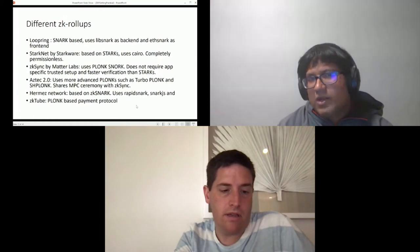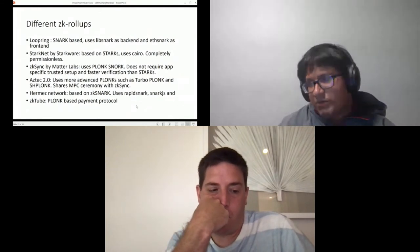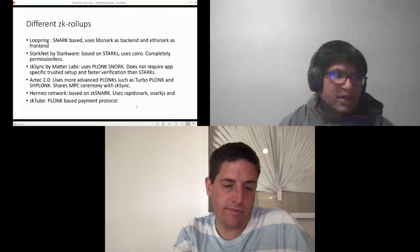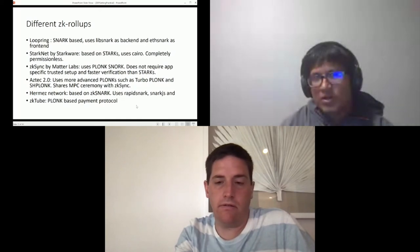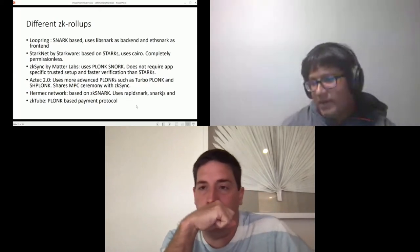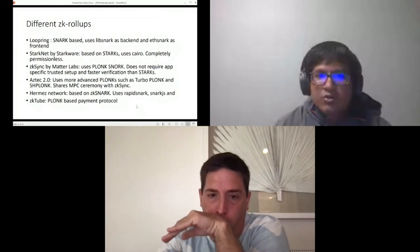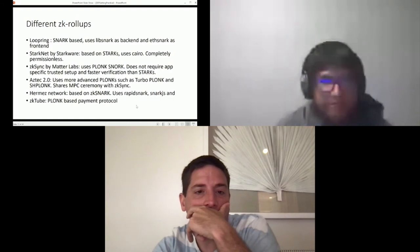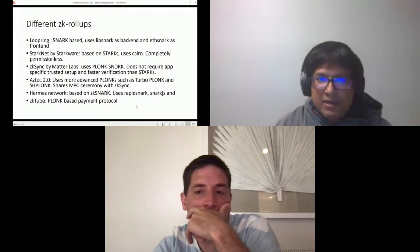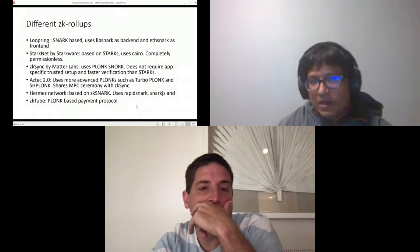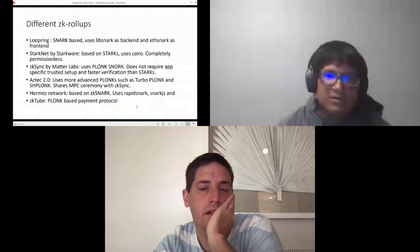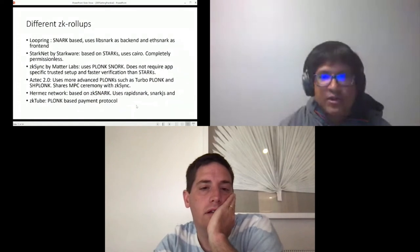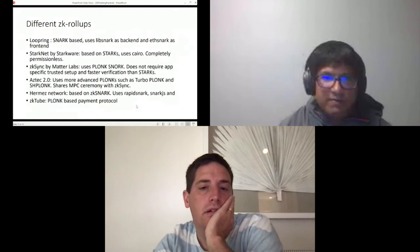You might think why you cannot use Bulletproofs here. That is because Bulletproofs are really efficient for range proofs, so they are fine when you are just doing pure transactions. But in case of Ethereum we want to prove something more—we want to run smart contracts and we need a more feature complete language. For that, Bulletproofs are not so good because of the large verification times and that's where STARKs come into play. Then we have zkSync which uses Plonk, so this doesn't require app-specific trusted setup and they are similar to SNARKs so verification is faster than STARKs. There is also Aztec 2.0 which uses more advanced Plonk, and then there is Hermez and ZKTube which are also based on zk-SNARKs and Plonk.